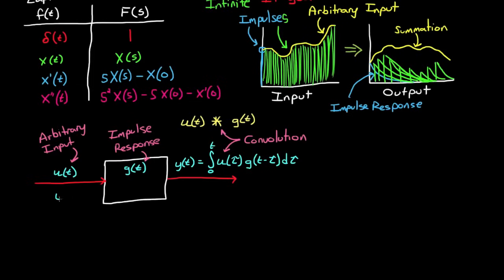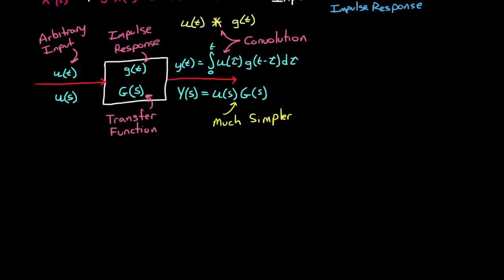But here's what's great about the Laplace transform. If you take the Laplace transform of the input, which becomes u of s, and you take the Laplace transform of the impulse response, g of s, then the output y of s is just the multiplication of u and g. And g of s is the Laplace transform of the impulse response, which is called the transfer function. So we have reduced that difficult convolution integral with a much simpler multiplication step. Or more accurately, the Laplace transform is taking care of the convolution for you.